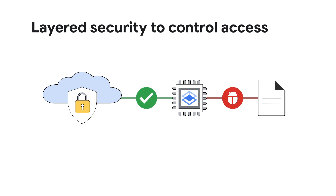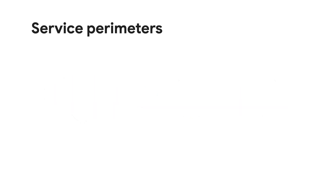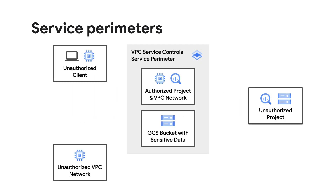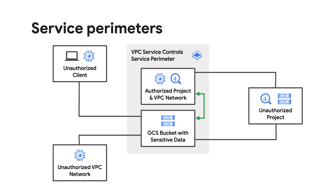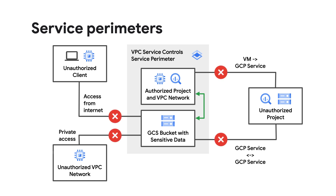VPCSC can help you further improve security, reduce risk of data exfiltration, and address compliance requirements. By simply creating a service perimeter around your projects and VPC networks, you prevent access to Google Cloud services from outside the perimeter. You also restrict access from inside the service perimeter to services outside the perimeter.